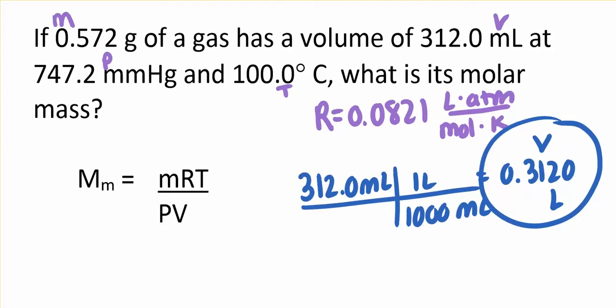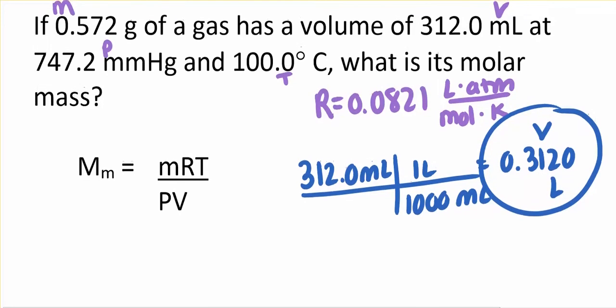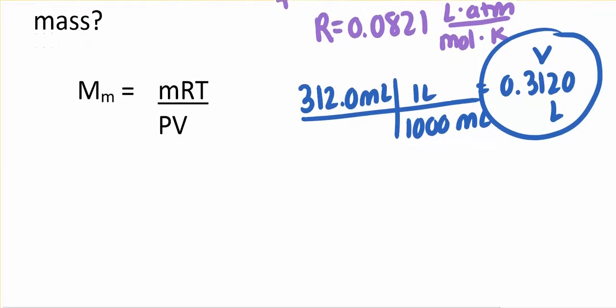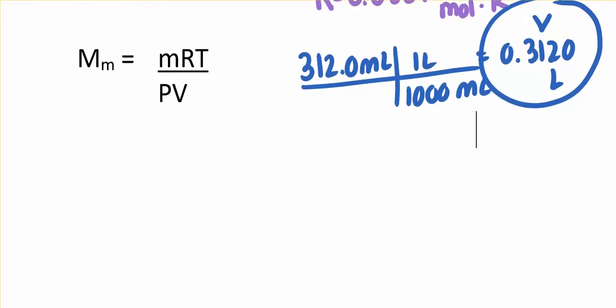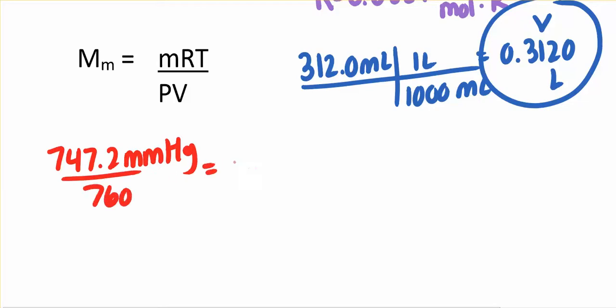What else do we have? We need to fix our pressure. It was given to us in millimeters of mercury. We need to divide by 760 to get our pressure in atmospheres. And again this number had four sig figs, we treat this one as though it's exact, so our pressure has four sig figs.